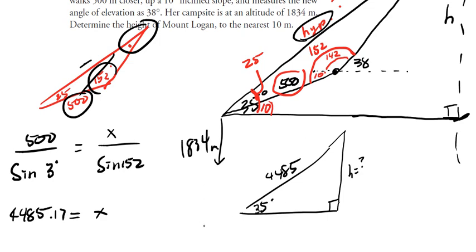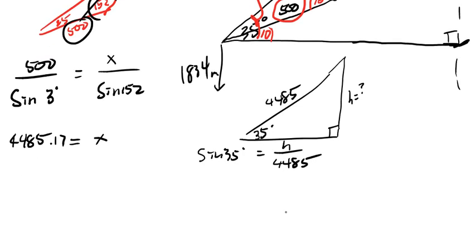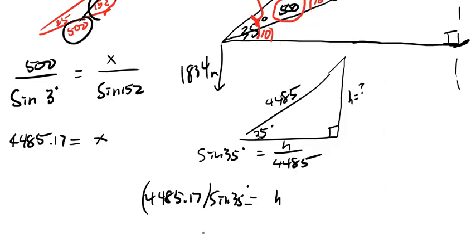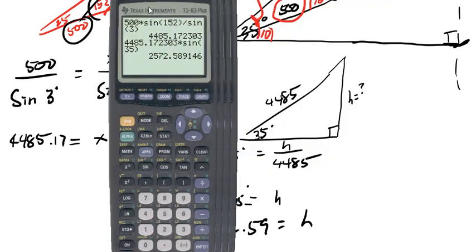So that is sine 35 equals h over 4485. And so height is 4485.17 times sine 35. So we'll do that. This is 2572.59 meters, the height here.